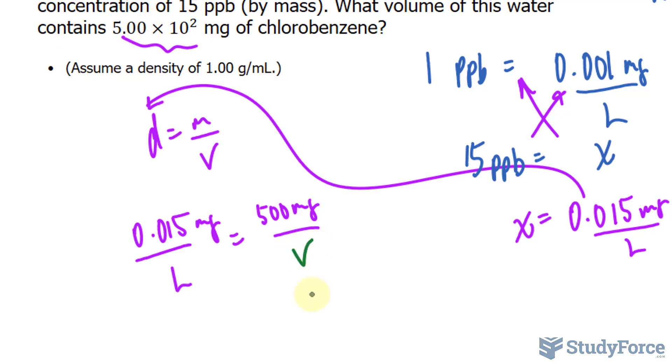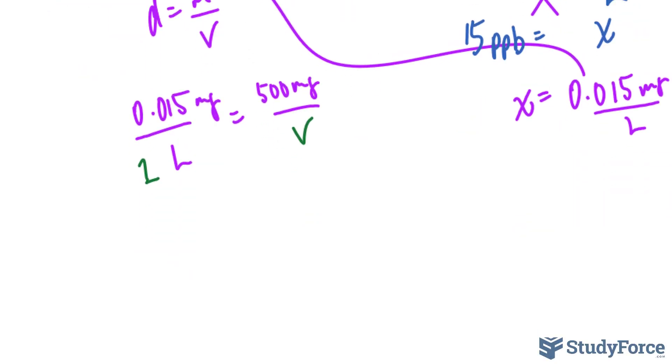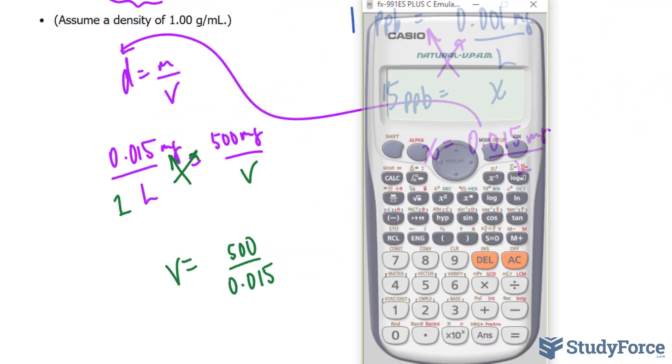And we're looking for the volume. So we have one liter here and we have unknown liters here, that's our volume, it's just a placeholder, a variable. Let's solve for v. We cross multiply once again and we end up with v being equal to 500 divided by 0.015.